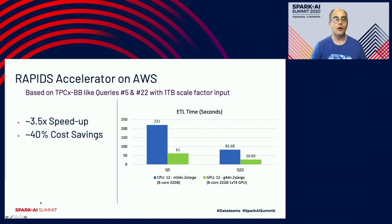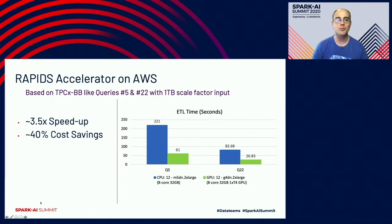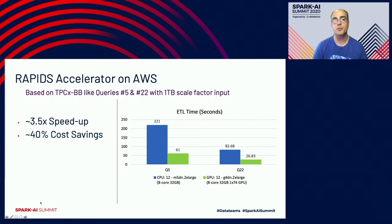We wanted to see if this was just that one query we wrote — after all, it could look like a weird benchmark. So we took a couple of TPC-XBB queries and ran them on the exact same cluster to show CPU versus GPU. We saw about a 3.5x speedup and a 40% cost savings on these two TPC-XBB queries on that same setup.